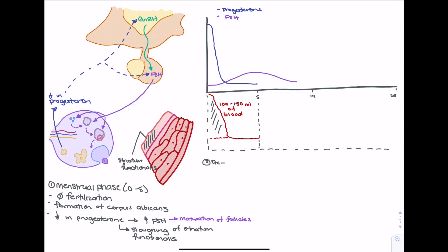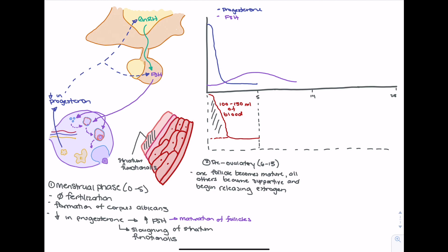The next phase is the pre-ovulatory phase, lasting between days 6 and 13, ending before day 14 when ovulation occurs. One follicle has become mature and will release the egg; all others have become supportive and will release estrogen. As these follicles develop into secondary or primary follicles, they release estrogen to support the mature follicle. As estrogen levels increase, it triggers a hormonal cascade — increasing estrogen leads to an increased level of luteinizing hormone, and estrogen also causes engorgement of the stratum functionalis, helping with ovulation and supporting implantation.